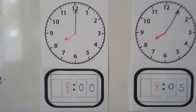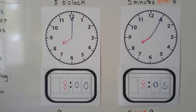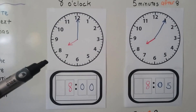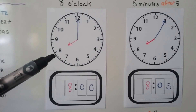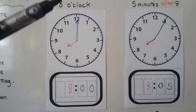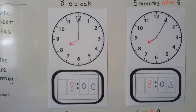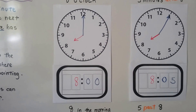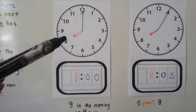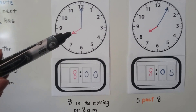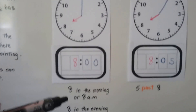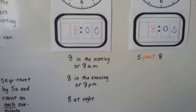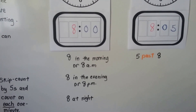We saw in the previous video that when the minute hand is pointing to the 12, it's o'clock, and wherever the hour hand is pointing tells us which o'clock it is. So this would be 8 o'clock. On a digital clock, we'd see an 8 and a 0 and a 0. This would be either 8 in the morning or 8 a.m., or 8 in the evening or 8 p.m. We could also say 8 at night.